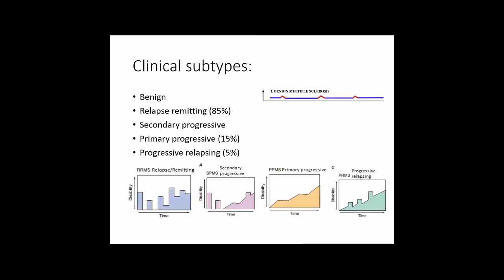The clinical subtypes of multiple sclerosis include benign MS, relapse-remitting, secondary progressive, primary progressive, and progressive relapsing. Benign MS is quite rare — patients are stable throughout their life with random relapses but no progression of disease and no permanent disability or loss of CNS function over a period of 10–20 years.